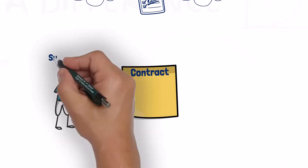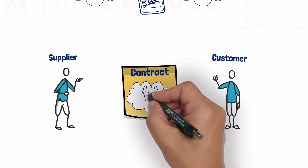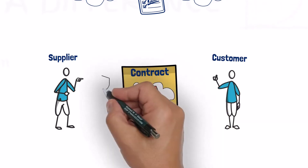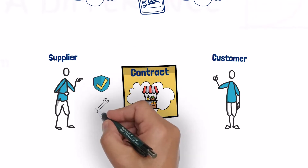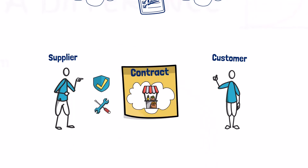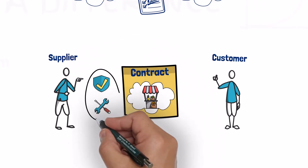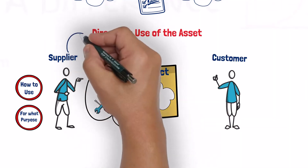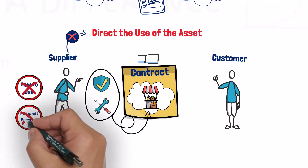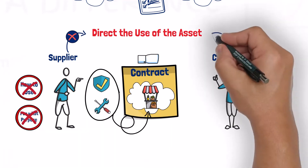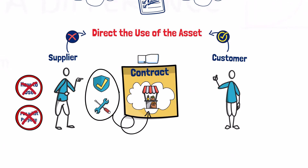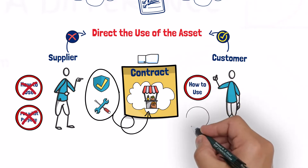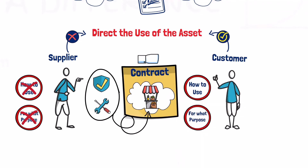For example, assume we have a contract where the supplier grants the customer the right to use a retail unit. According to the terms of the contract, the supplier only provides security and maintenance. Although these services are essential for the efficient use of the retail unit, they don't give the supplier any right to direct the use of the asset. It is only the customer who can direct the use of the asset and decide about how the asset is used and for what purpose it is used.